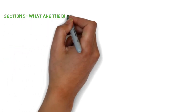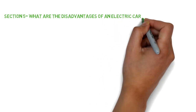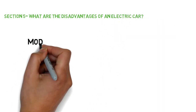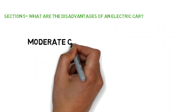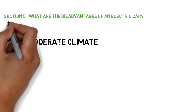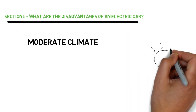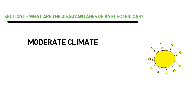Section 5: What are the disadvantages of an electric car? Electric cars perform their best in moderate climates. It is therefore no surprise that they sell the most in places with mild weather like San Francisco. In extreme climates there are drawbacks. Firstly, the energy that goes into cabin climate control reduces the overall range.